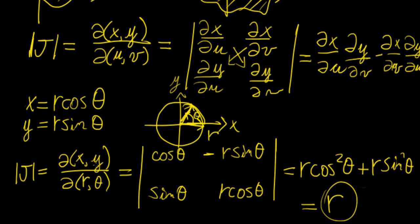We can extend this to three dimensions as well. As long as we can define our original coordinate system in terms of the new coordinates, we can always perform the transformation, and the Jacobian gives us the scaling factor needed for that transformation to be complete. In the next video we'll talk about partial integration, and after that we'll start covering double integrals and triple integrals — where this concept of the Jacobian will come up several more times when we perform integration in different coordinate systems.